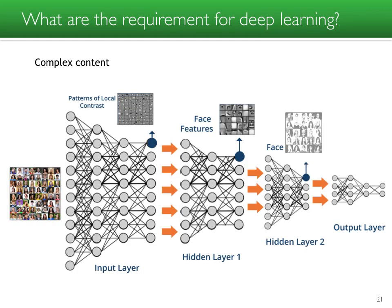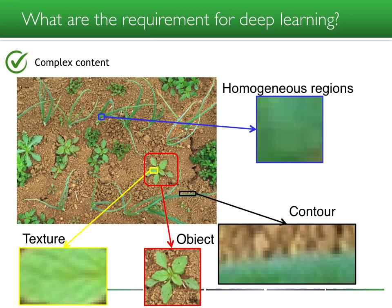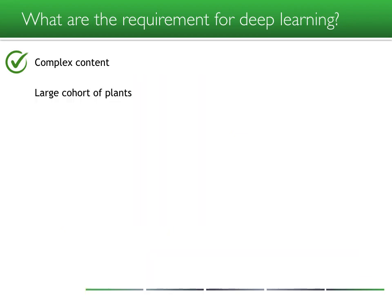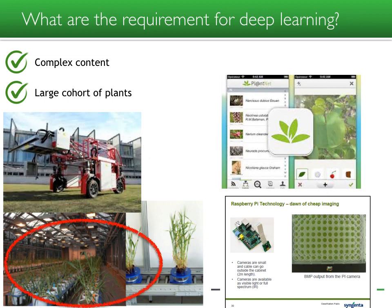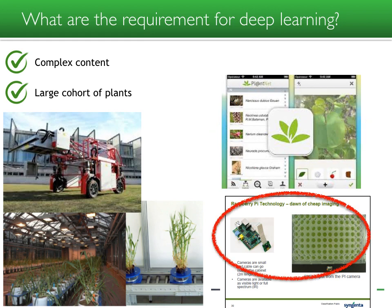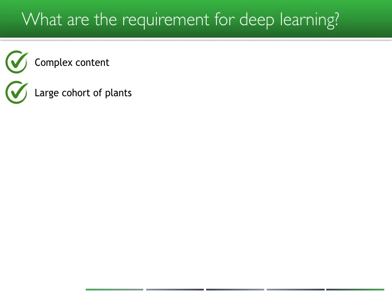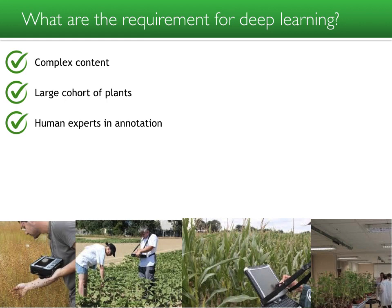Deep learning means deep layers of parameters, which requires complex content. Indeed, if you look at an agricultural scene, you have complex content with homogeneous regions, contours, objects, and textures. Deep learning also needs a large cohort of plants, and thanks to robotization — both outdoor and indoor, with expensive systems but also low-cost systems such as smartphone apps or Raspberry Pi — it is possible to generate large cohorts. Deep learning also needs human annotation, and colleagues in the field have been doing this visually for decades.